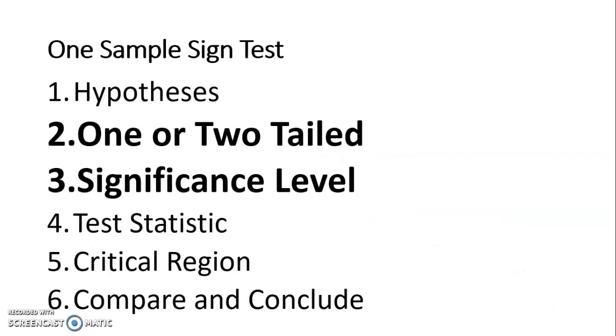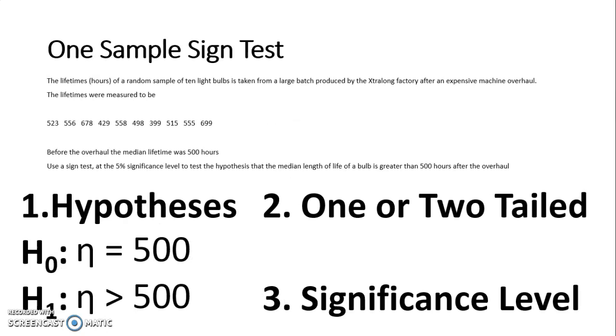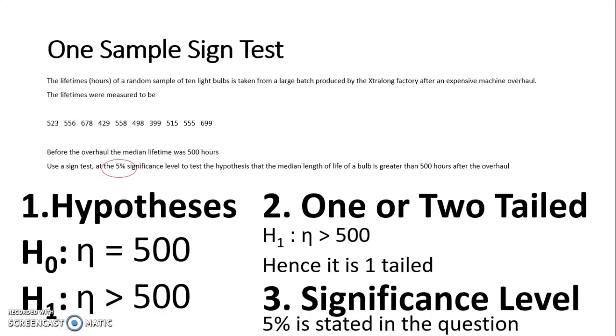Next up, we have step 2 and step 3, where we're looking if it's one or two-tailed and the significance level. As our alternative hypothesis is greater than 500, that means we're only looking at the upper tail in this question, and therefore this is a one-tailed test. It states in the question that it is a 5% significance level, but remember if it doesn't tell you, you should always assume 5% as it says on the front of the paper.